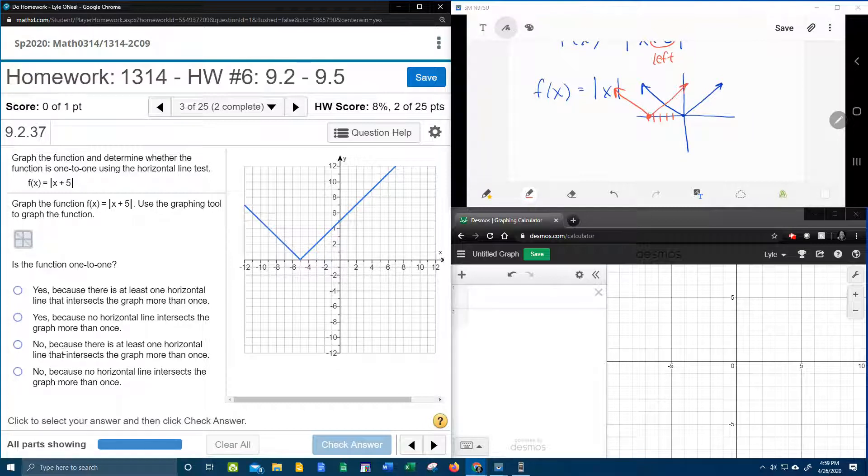So is it no because there is at least one horizontal line that intersects the graph? Or is it no because no horizontal line intersects the graph more than once?